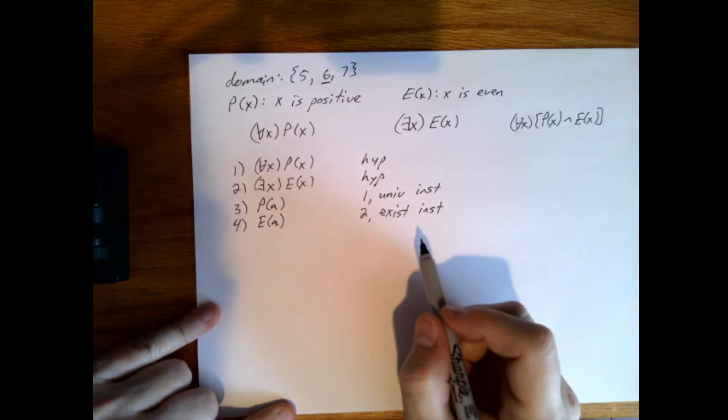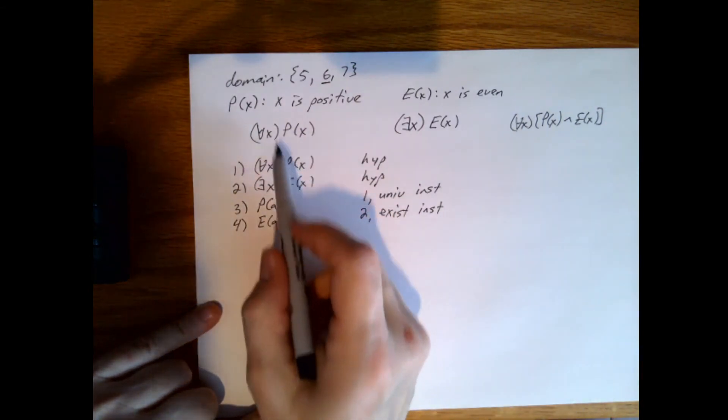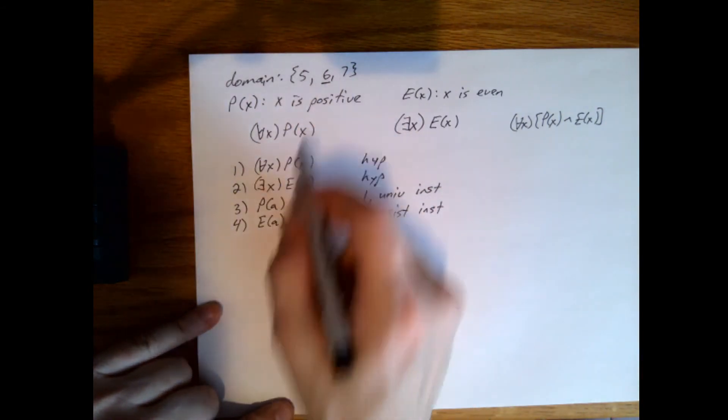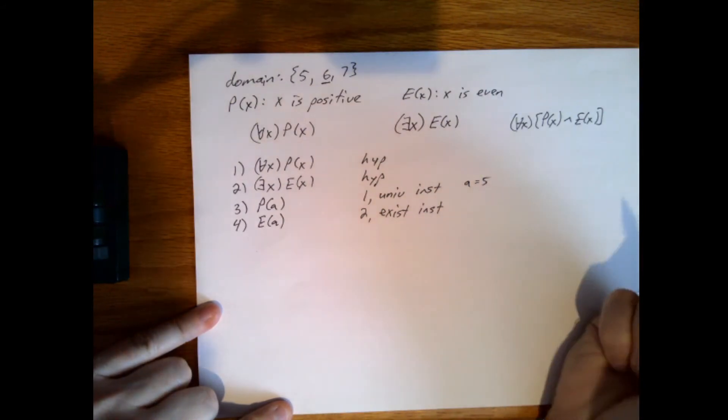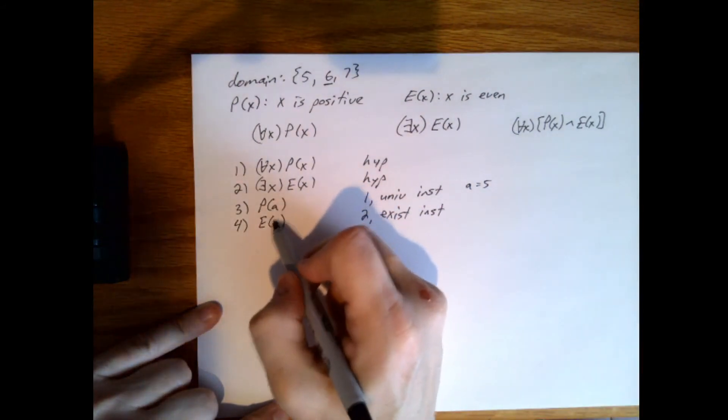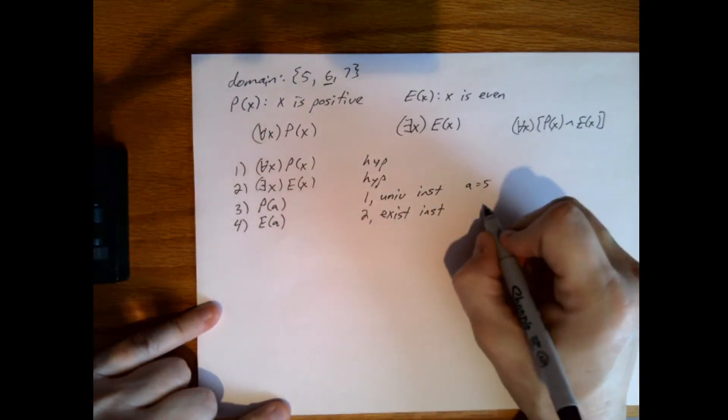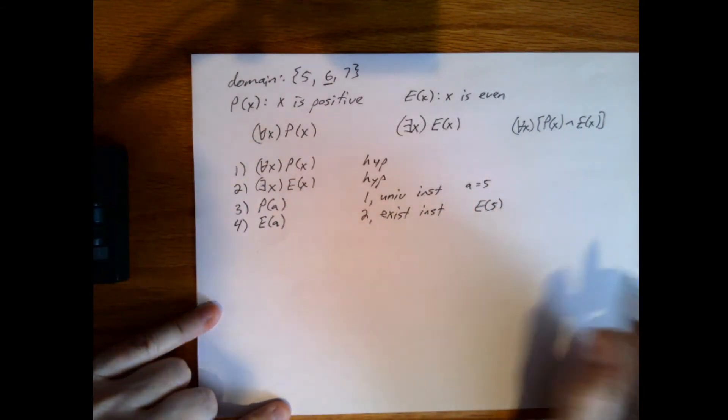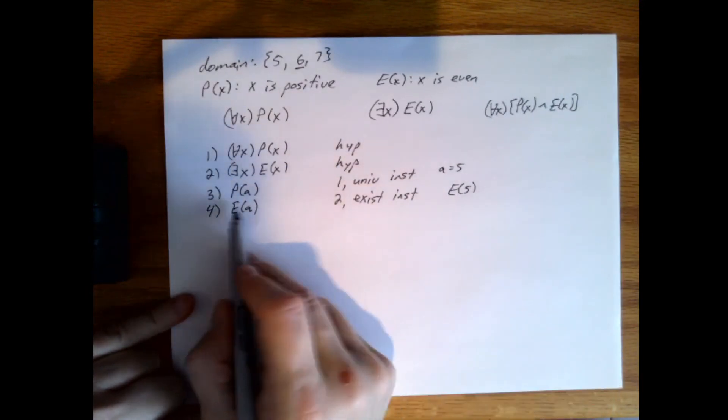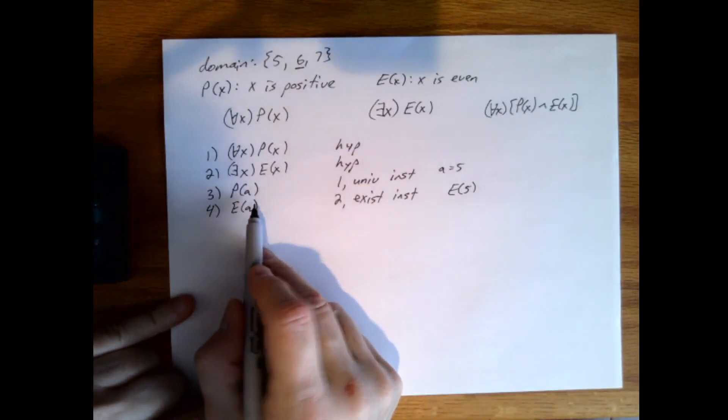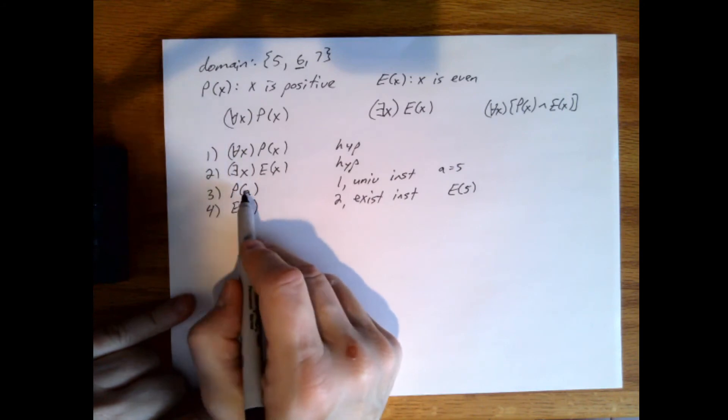So what's wrong there? Well, remember, we said that P was true for everything here, so A might have been five. And since I'm using A in both places, now I'm trying to write E of five, and so five is even. Well, five's not even. So now this is a false statement, because I don't know which P I've used here.